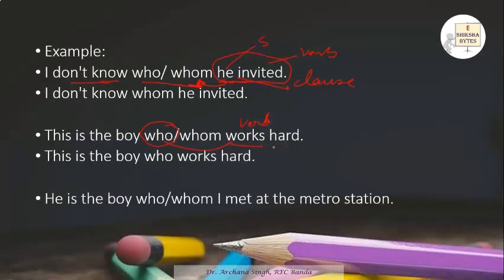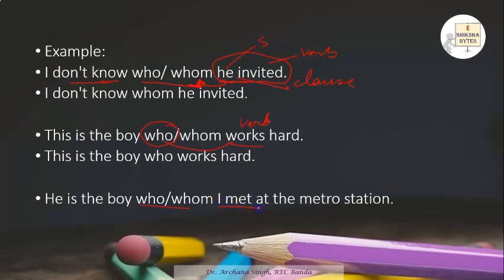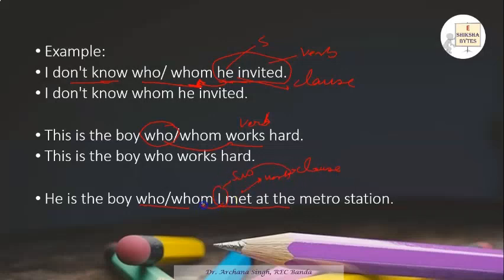'He is the boy who/whom I met at the metro station.' Here, 'I met' — 'I' is the subject and 'met' is the verb — together they form a clause. Since there is a clause, we use 'whom.' So the correct answer is: 'He is the boy whom I met at the metro station.'